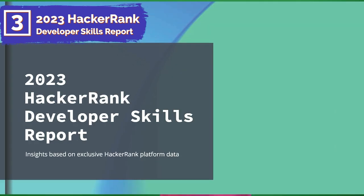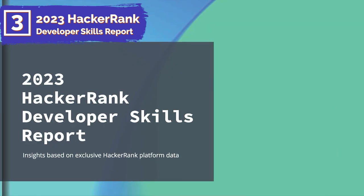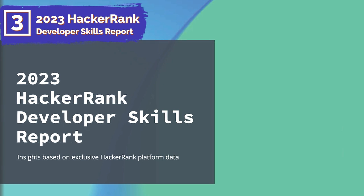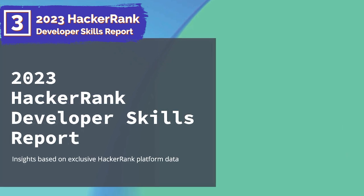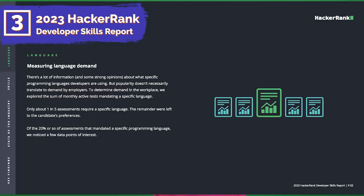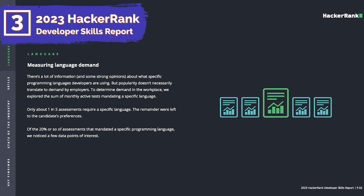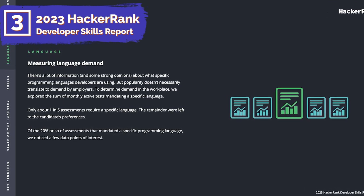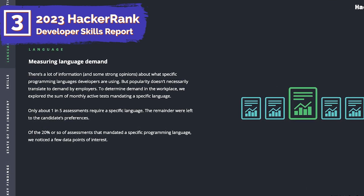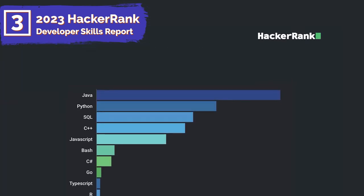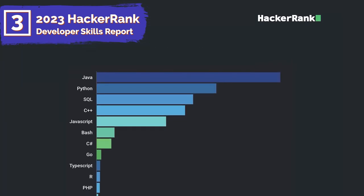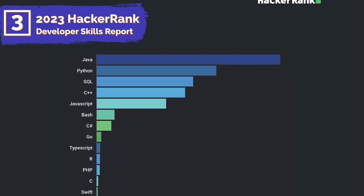The report is based on data called from HackerRank's own platform, rather than relying on survey responses. The report ranks the most in-demand software engineering skills and programming languages among employers and developers, based on the number of language-specific skills assessments that the company conducted in the past year. The top five languages by volume were Java, Python, SQL, C++, and JavaScript.